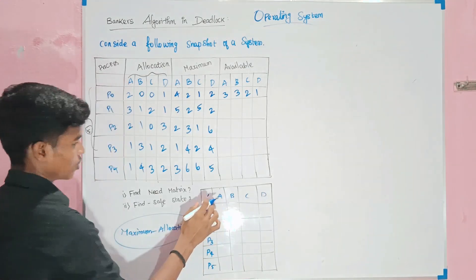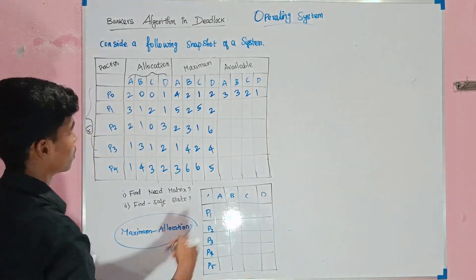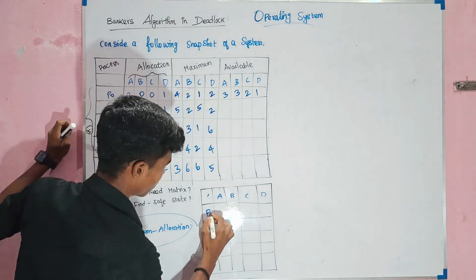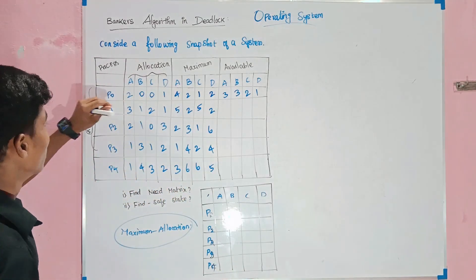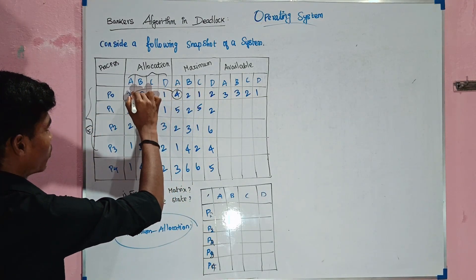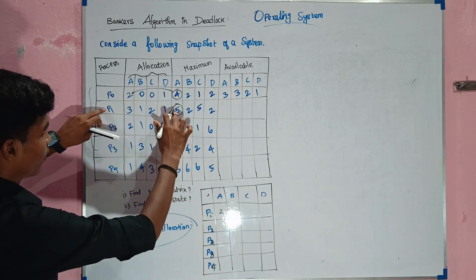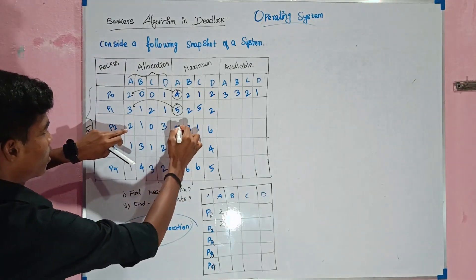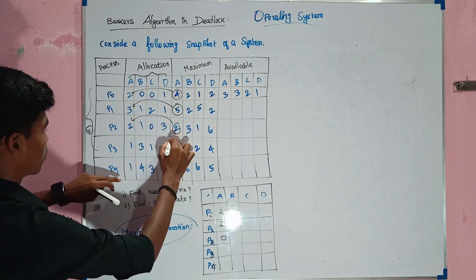Now let's calculate the need matrix. For variable A: P0 is 4 minus 2 = 2. For P1: 5 minus 3 = 2. For P2: 2 minus 2 = 0. For variable B, P1: 1 minus 1 = 0. P2: 3 minus 1 = 2.